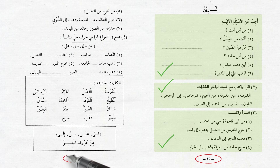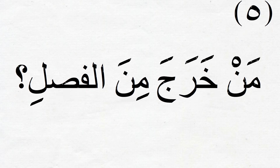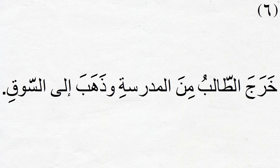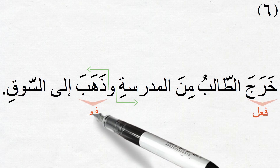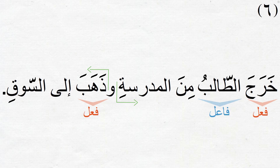We are on page 26 now. Sentence number 5: من خرج من الفصل — 'Who came out of the classroom?' Sentence number 6: خرج الطالب من المدرسة وذهب إلى السوق — 'The student came out of the school and went to the market.' Another couple of fi'aliyya sentences. The two verbs are خرج and ذهب. The fa'al of the first is الطالب, and the second is hidden, referring to huwa.